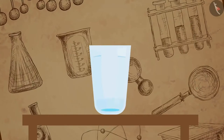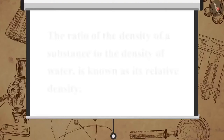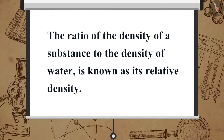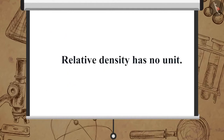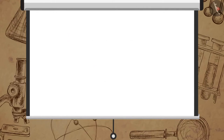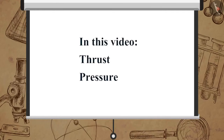We can find out if an object will sink or float in water by comparing its density with that of water. The ratio of the density of a substance to the density of water is known as its relative density. Relative density does not have a unit as it is the ratio of similar quantities. In this video we learned about thrust, pressure, buoyancy, and Archimedes' principle.